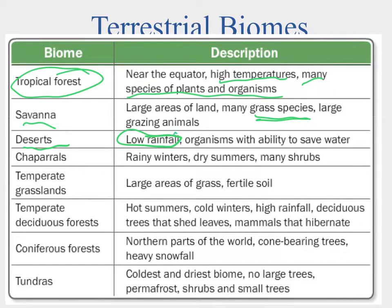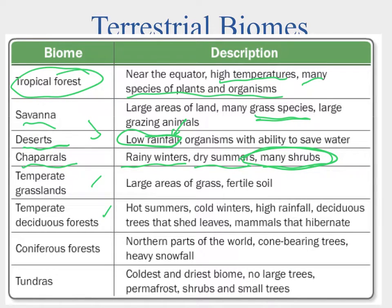We also have the chaparral — a shrubland with rainy winters and very dry summers, kind of a mix between grassland and desert. Moving away from the equator we reach temperate grasslands, which have large areas of grass, highly fertile soil — like the American Midwest. Then there are temperate deciduous forests with hot summers, cold winters, and lots of rain; deciduous trees shed their leaves and mammals tend to hibernate, like the hardwood forests of the eastern US.